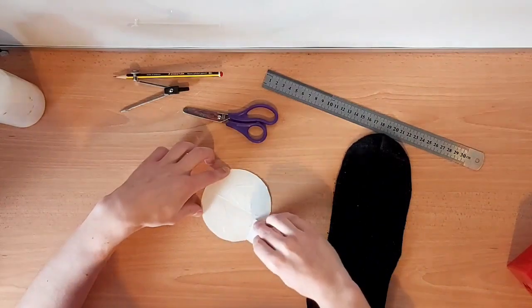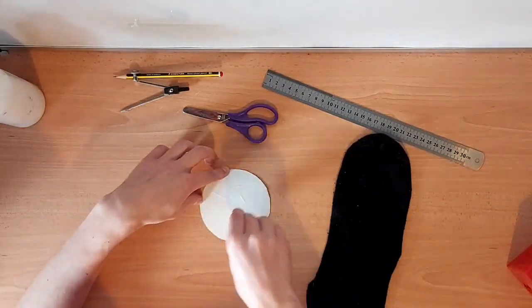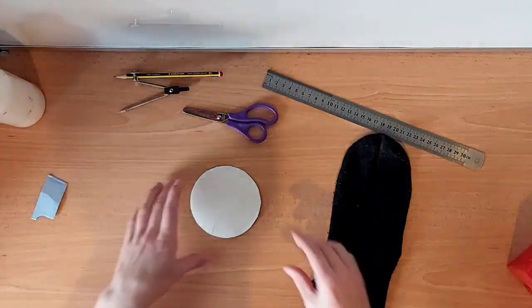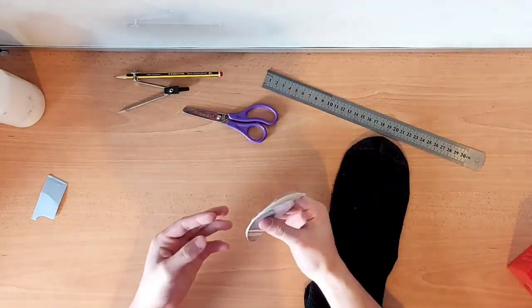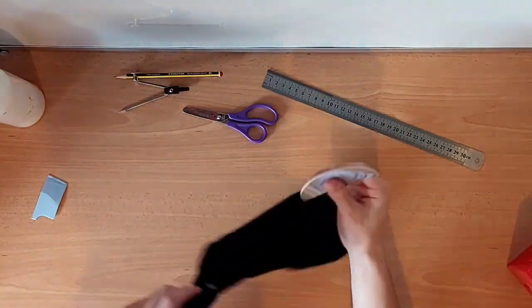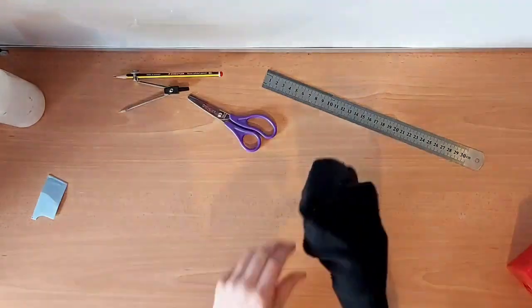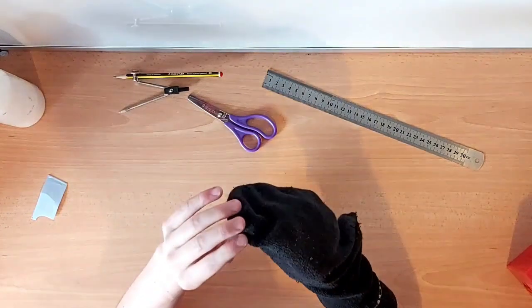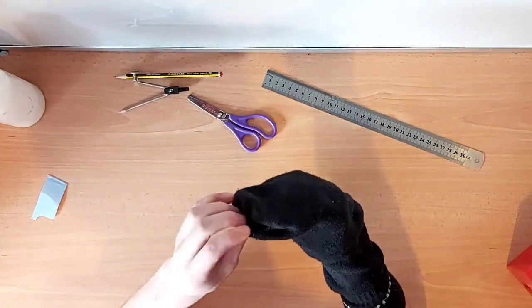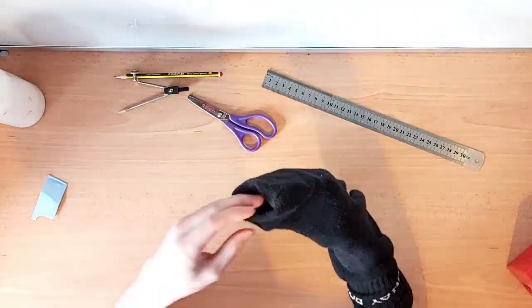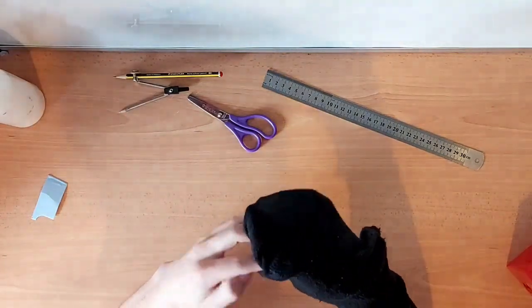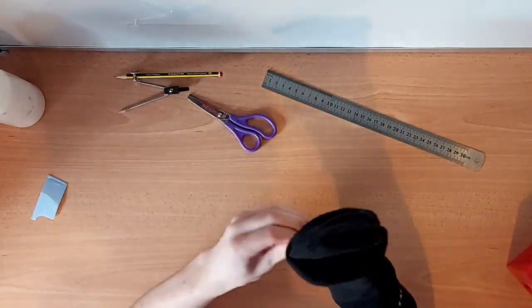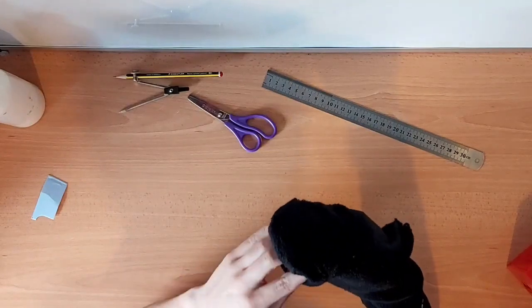Now you need to fold it in half, but make sure you don't close it completely. Now you need to take it and put it inside the sock, put it all the way up to the top, and then when it's at the top you need to try and open it back up and push the sock into it to make the mouth shape. Now you need to press the sock down onto the inside of the cardboard so that it sticks.